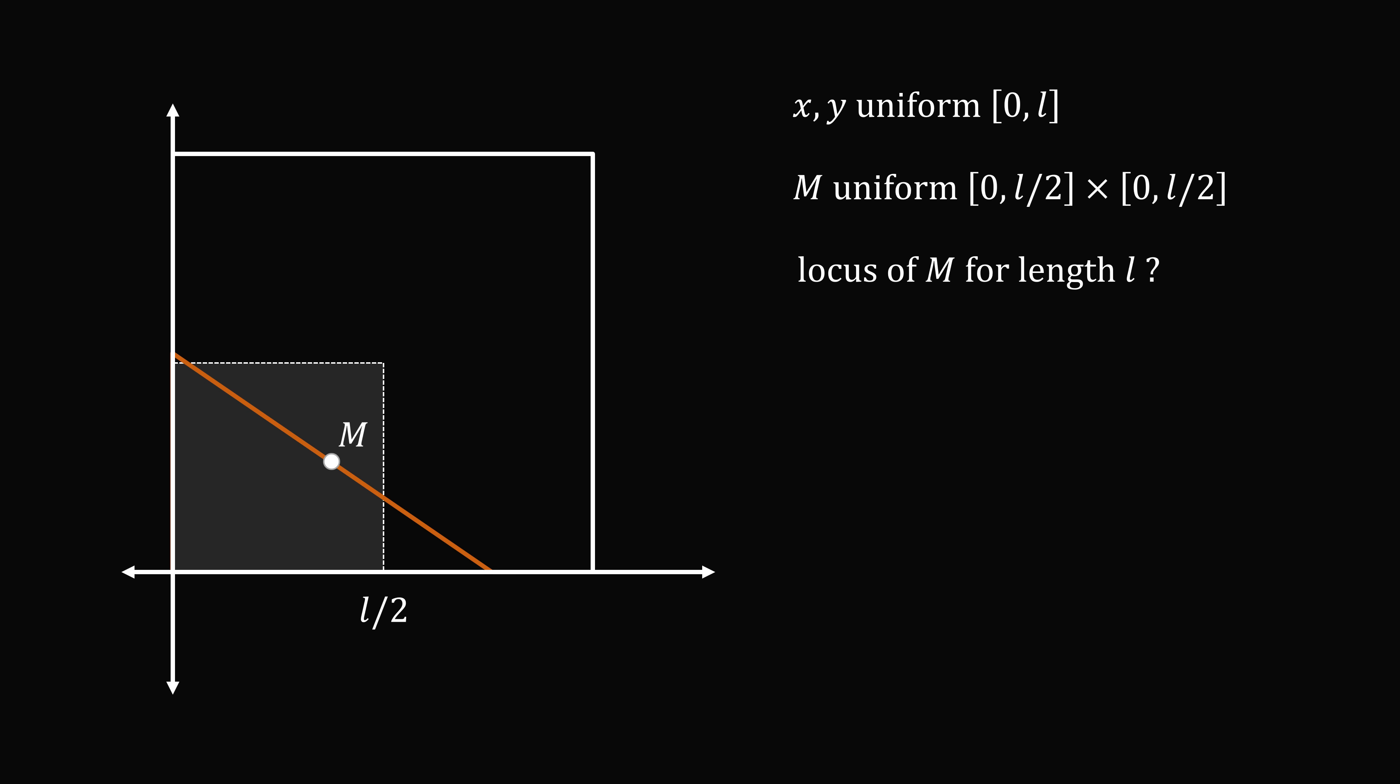So we can now ask, what is the locus of points M for which the distance between the two points has a length exactly equal to L, the side length of the square? Let's work through some examples. So we can imagine the two points are like this, the distance between them is exactly L, and the midpoint will be right here. If we slide this over, the midpoint will be here. We can slide it over again, and we continue tracing out all of these points. So what shape does this resemble? We exactly get a quarter circle.